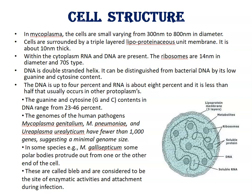In mycoplasma, cells are small, varying from 300 nm to 800 nm in diameter. The cell is surrounded by a triple-layered lipoproteinaceous unit membrane, about 10 nm in thickness. Within the cytoplasm, RNA, DNA, and ribosomes are present. Ribosomes are 14 nm in diameter and 70S type. DNA is a double-stranded helix and can be distinguished from bacterial DNA by its low guanine and cytosine content. DNA constitutes about 4% and RNA about 8%, less than half that usually occurs in other prokaryotes. Guanine and cytosine content in DNA ranges from 23 to 46%.